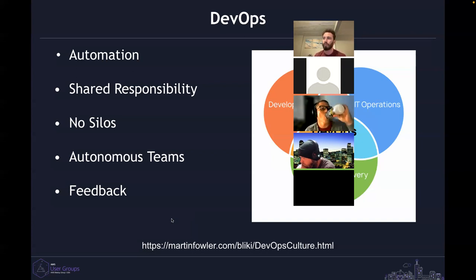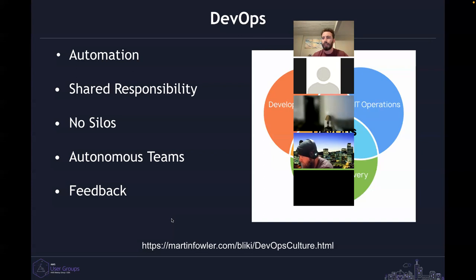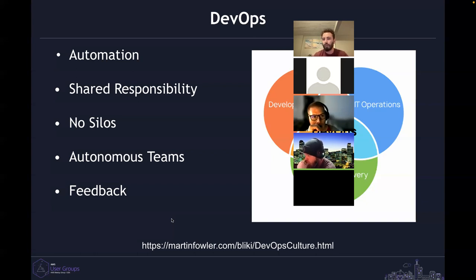We want automated tests running in our pipeline. Shared responsibility means that as a developer, I need to make sure my code gets to the client and into production. The definition of done shouldn't be 'developer completes code and sends it to the next person' — it should be the developer being responsible for getting that code into production, setting up monitoring, and being part of an SRE mindset. Having no silos means communication is open across the organization.